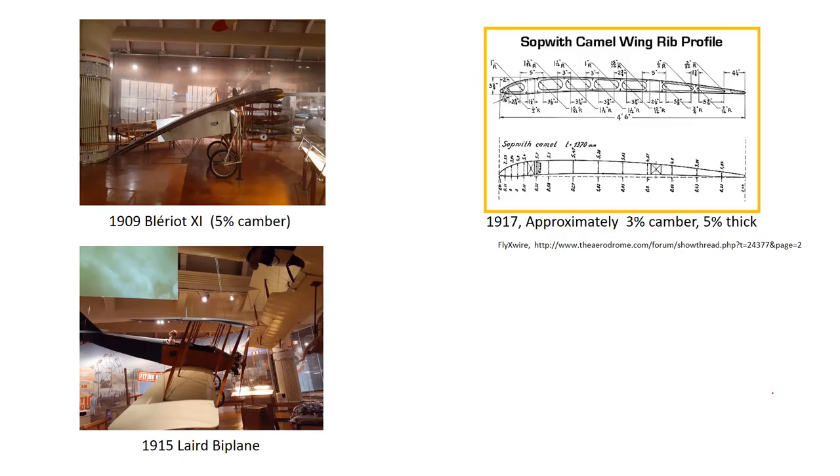Which brings us up to about the beginning of World War I. So if we look at aircraft up to that point, 1909 Blériot, about a 5% camber on that wing. I didn't try to measure the camber on this Laird biplane from 1915. But you can see it's just a thin cambered wing, just like this. Sopwith Camel. Again, not as much camber. They were trying to, it's a fighter plane, it's got to go fast, but it's still pretty thin.